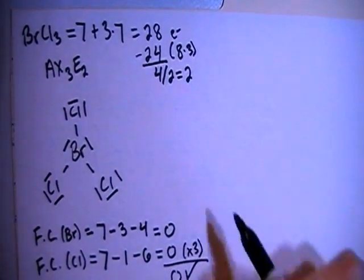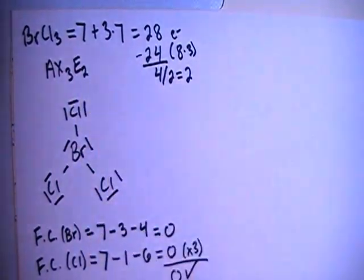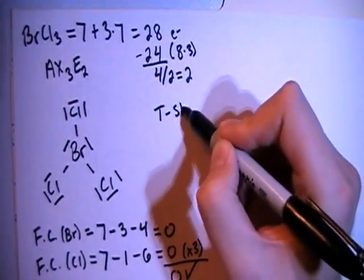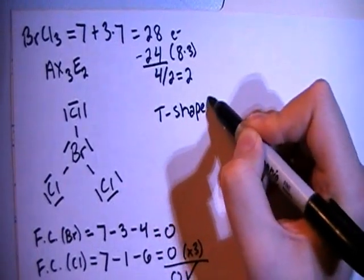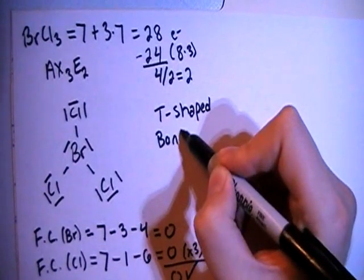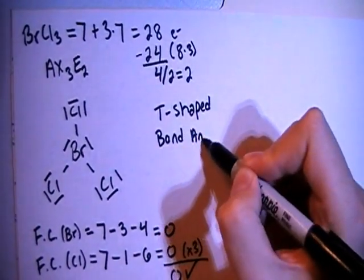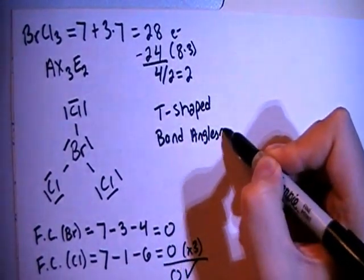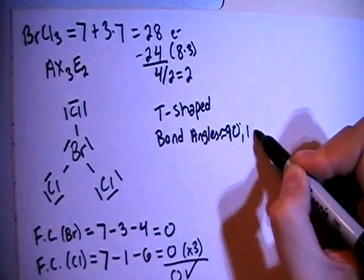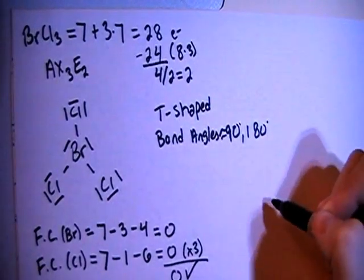Now in terms of shape, when we have the AX3E2 type structure, that means that this molecule is going to be what's called T-shaped. And when you have a T-shaped molecule, the bond angles are going to be approximately equal to 90 degrees and 180 degrees. All right?